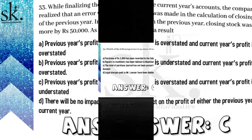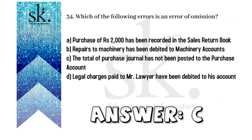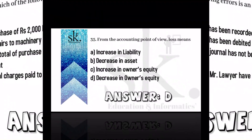The next question: which of the following errors is an error of omission? The total of purchase journal has not been posted to the purchase account, therefore the answer will be C.